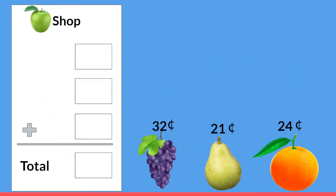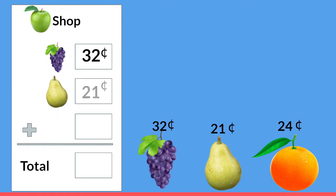On this receipt, instead of buying two items we're going to buy three. The first one is some yummy grapes and they're thirty-two cents. And then I'm going to buy a pear for twenty-one cents. And oh, another juicy orange for twenty-four cents.